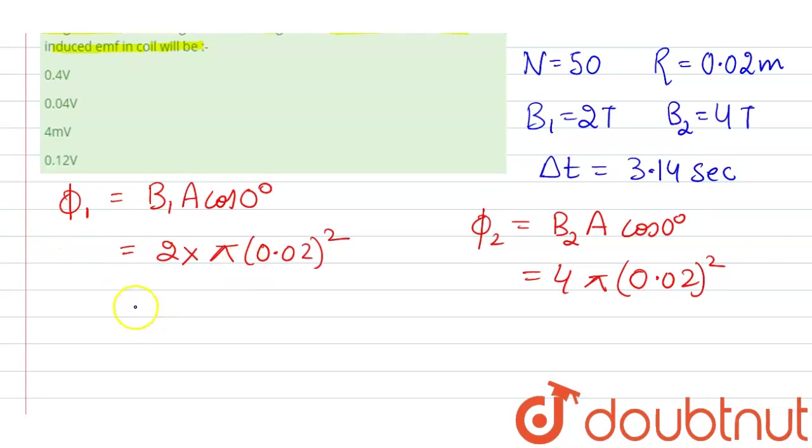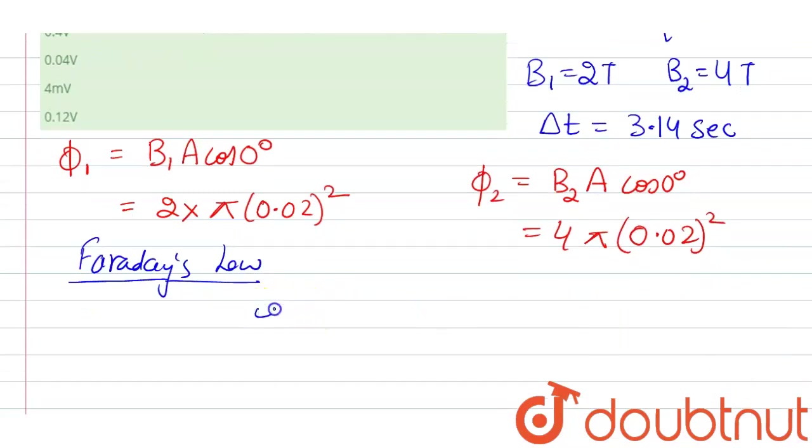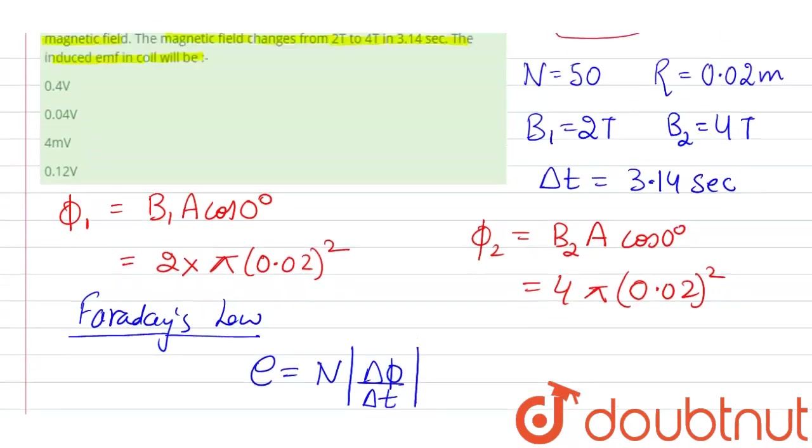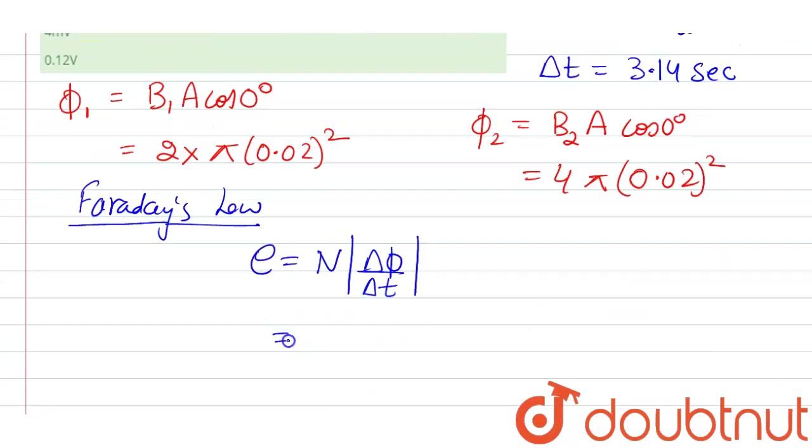Next we determine EMF by Faraday's law. By Faraday's law, we can say that the induced EMF will be equal to N delta phi over delta t. So here N is given 50, delta phi can be found out by phi 2 minus phi 1, and delta t is 3.14.